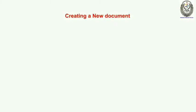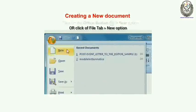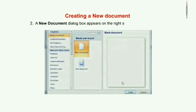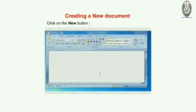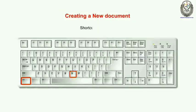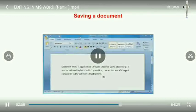Now let us learn how to create a new document. Number one: click on the Office button or File button, then click on New option. Number two: a New Document dialog box will appear on the right side of the MS Word window. Number three: select the blank document and click on the New button on the Quick Access Toolbar. The shortcut key is Ctrl + N.